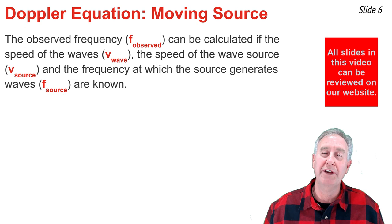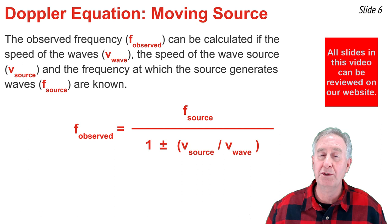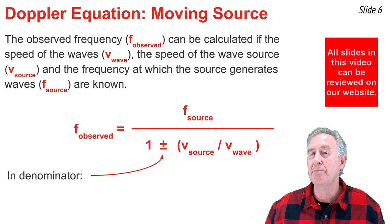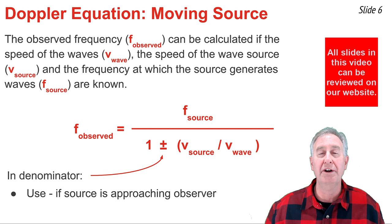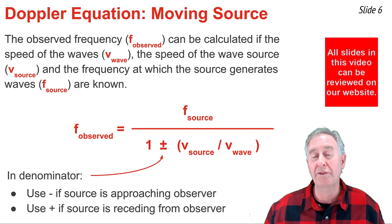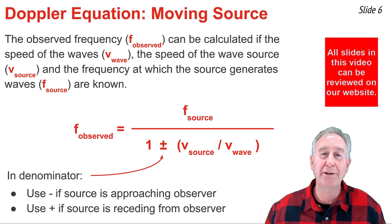The equation shows the observed frequency on the left side. In the denominator there is a plus or a minus sign. You insert the minus sign when the source is moving towards the observer — this makes the denominator less than 1, causing the observed frequency to be greater than the source frequency. You use the plus sign if the source is moving away from the observer, making the denominator greater than 1, so the observed frequency is less than the source frequency.